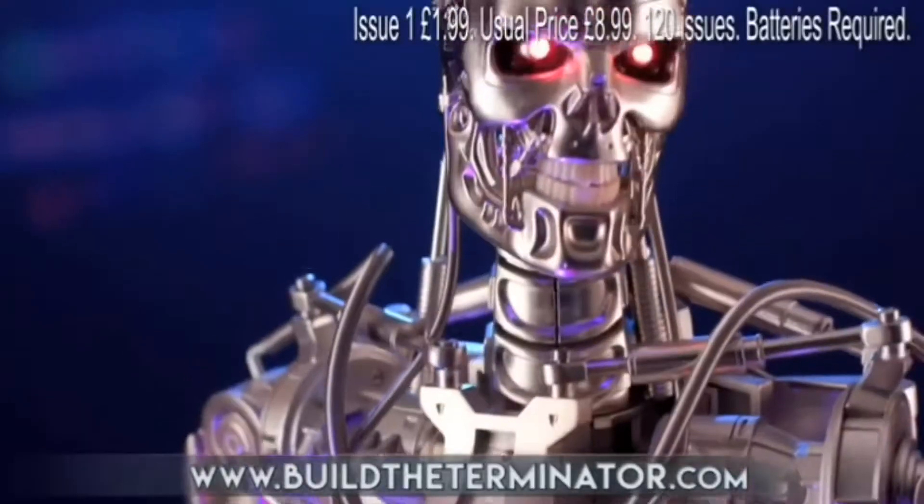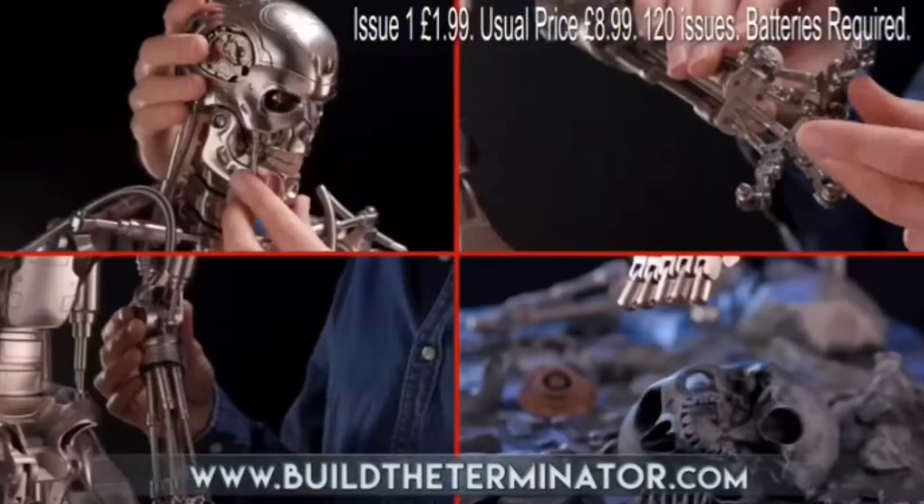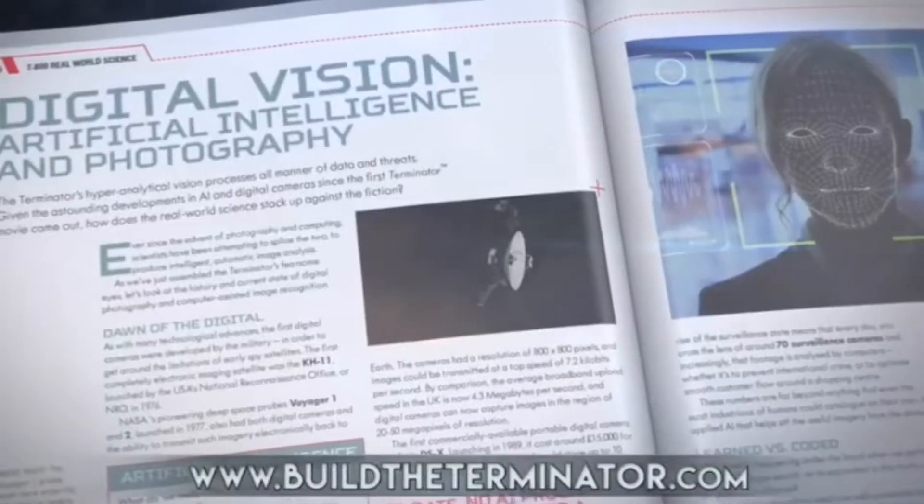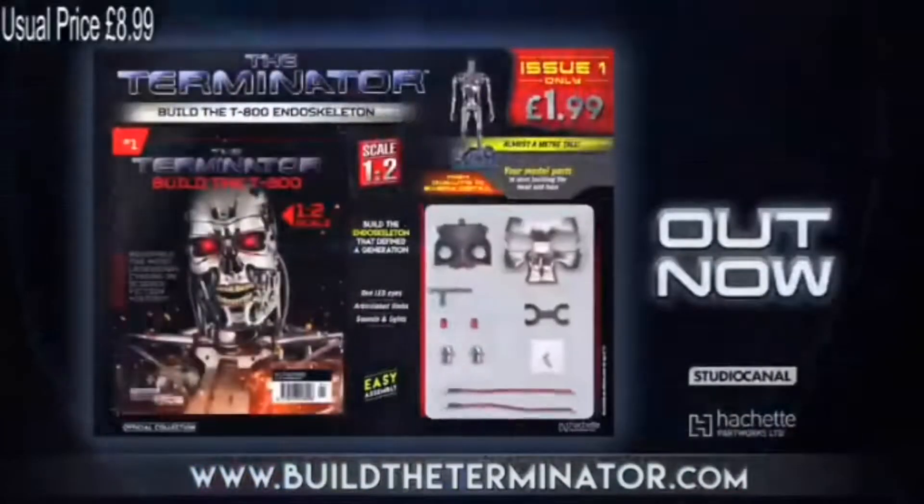The killing machine that defined a generation. Easy to build with high quality metal components. You can control sound, lights, articulated limbs and LED eyes, and explore the Terminator universe. Build the Terminator, Issue 1, just $1.99.